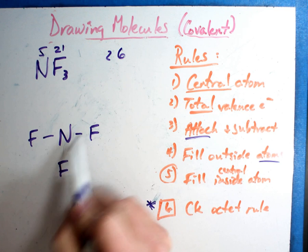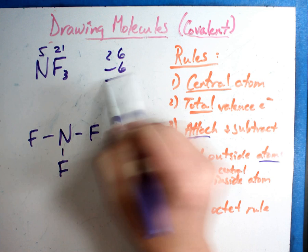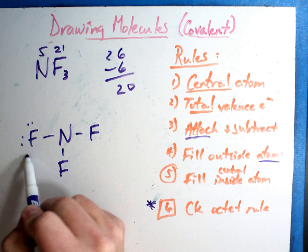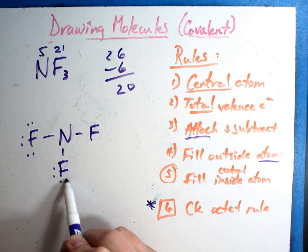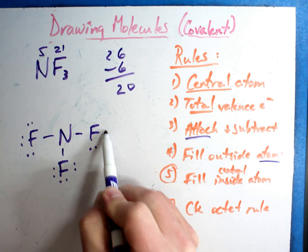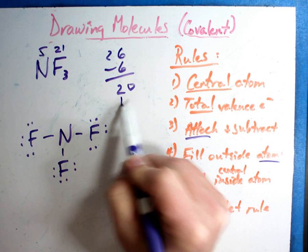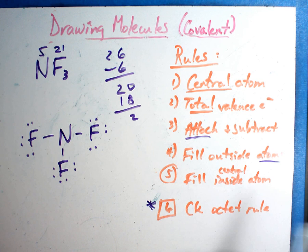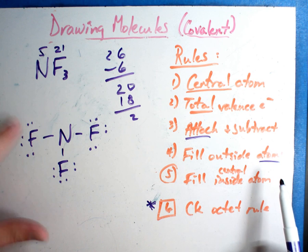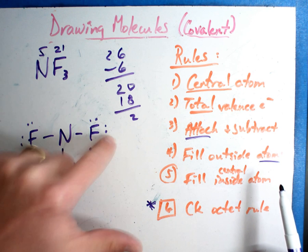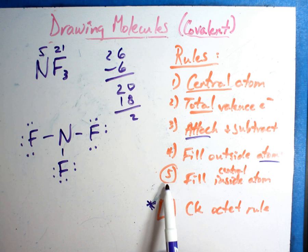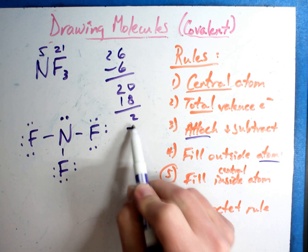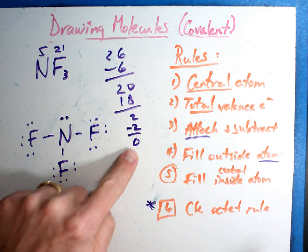You're not going to get thirty-two every time - this one has twenty-six to make it work. Attach and subtract: two, four, six are already gone, down to twenty. Fill the outside atoms - I'll count out six electrons for each of the three fluorines, using up eighteen electrons total, leaving two. Those two are leftovers. The rule says if there are leftovers, fill the central or inside atom. Nitrogen needs them anyway. Now I'm out - I have to get zero.